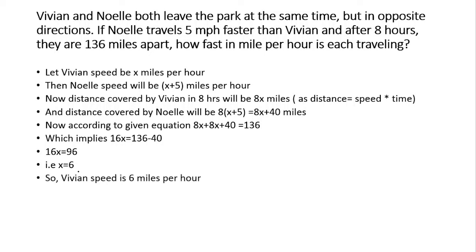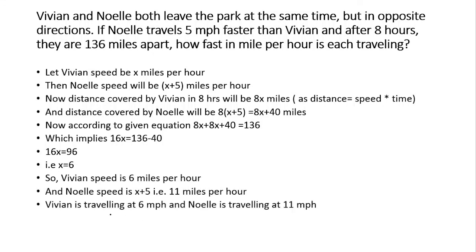Noel's speed is 11 miles per hour. So we have found both speeds: Vivian's speed is 6 miles per hour and Noel's speed is 11 miles per hour. Vivian is traveling at 6 miles per hour and Noel is traveling at 11 miles per hour. Thank you — if you like my video, please subscribe to my channel Technically Explained.